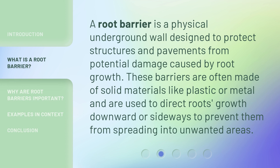A root barrier is a physical underground wall designed to protect structures and pavements from potential damage caused by root growth. These barriers are often made of solid materials like plastic or metal and are used to direct roots' growth downward or sideways to prevent them from spreading into unwanted areas.